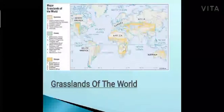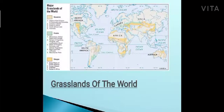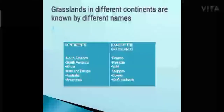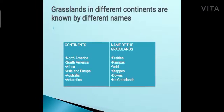Every continent has such features — the treeless grasslands. This is a map of the world in which the yellow part, green part, and light yellow part show the different grasslands of the world. All the different continents have grasslands known by different names. In North America they are called prairies, in South America they are called pampas, in Africa they are known as velds, in Asia and Europe they are known as steppes, and in Australia they are called downs.